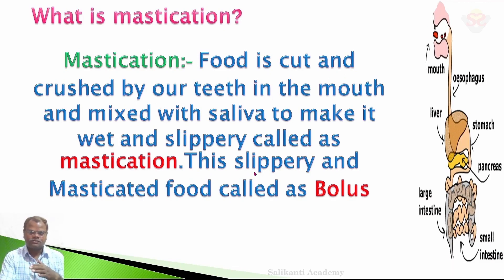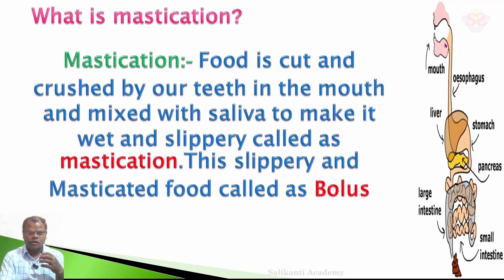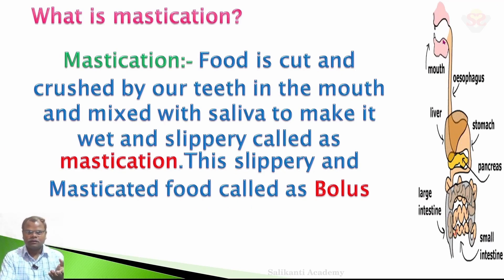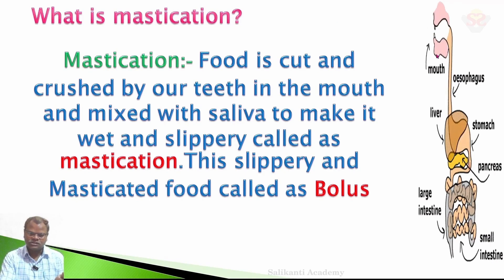This slippery, masticated food is called a bolus. After crushing the food with teeth and mixing it with saliva, we engulf it into the esophagus. This process is known as mastication.